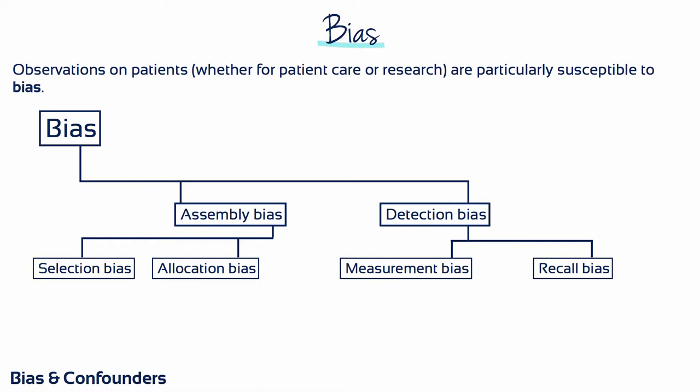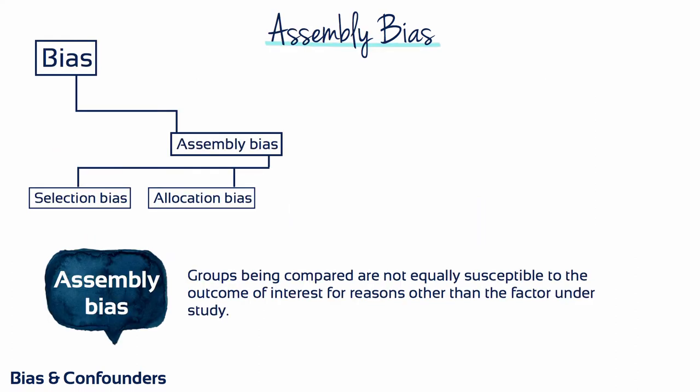Although dozens of biases have been defined, most fall into one of four broad categories: selection, allocation, measurement, or recall bias. Selection and allocation bias belong to the category of assembly bias, which arises when groups being compared are not equally susceptible to the outcome of interest, for reasons other than the factor under study.